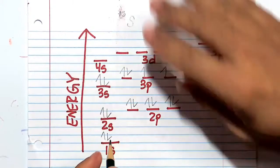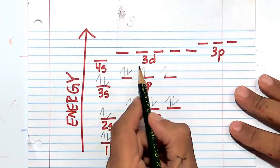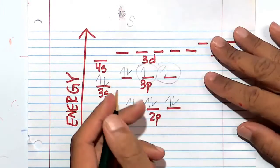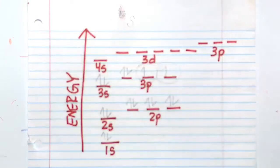And how many unpaired electrons are there? We have one unpaired electron, two unpaired electrons. So I'm getting for sulfur-16 two unpaired electrons.